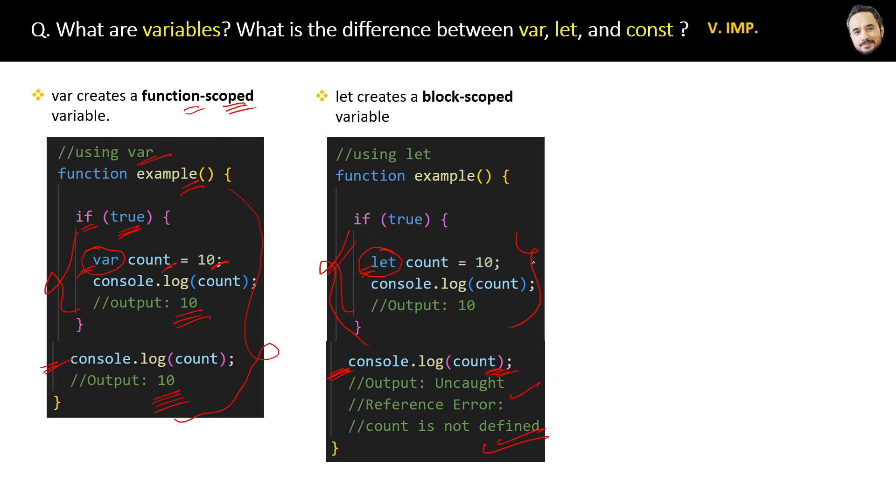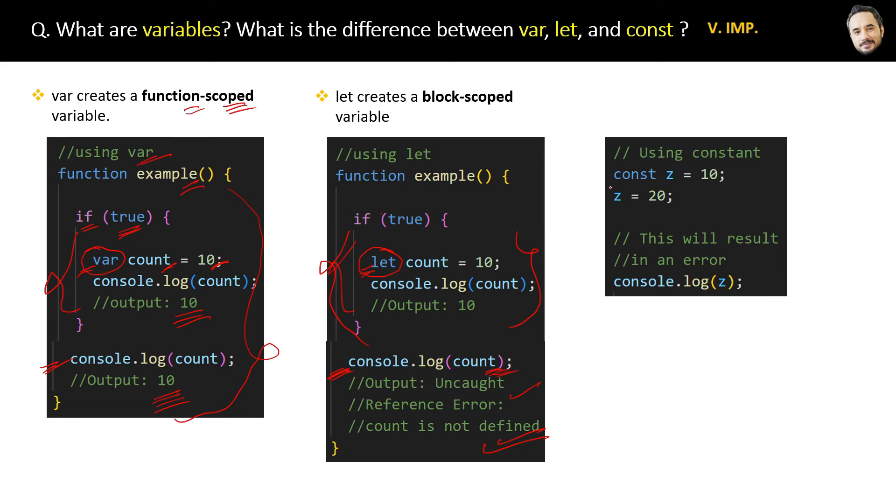The next keyword is the const keyword, which has a purpose slightly different from the var and let keywords. Here in the code you can see we assigned const z equal to 10, and then we are trying to assign a new value to z.